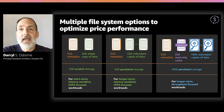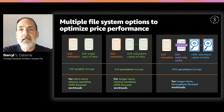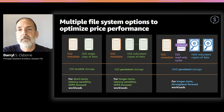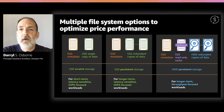HDD Persistent file systems also store data redundantly within the same availability zone with automatic disk replacement, but the data disks are HDDs. SSDs are used to handle metadata file operations, which represent the majority of file system operations. HDD Persistent file systems can also be configured with an optional SSD read-only cache to improve performance for frequently accessed data. They are designed for longer-term, throughput-focused workloads.